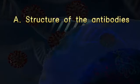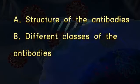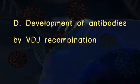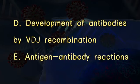This episode further explains the following topics: A, structure of antibodies; B, different classes of antibodies; C, functions of antibodies; D, development of antibodies by VDJ recombination; and E, antigen-antibody reactions.